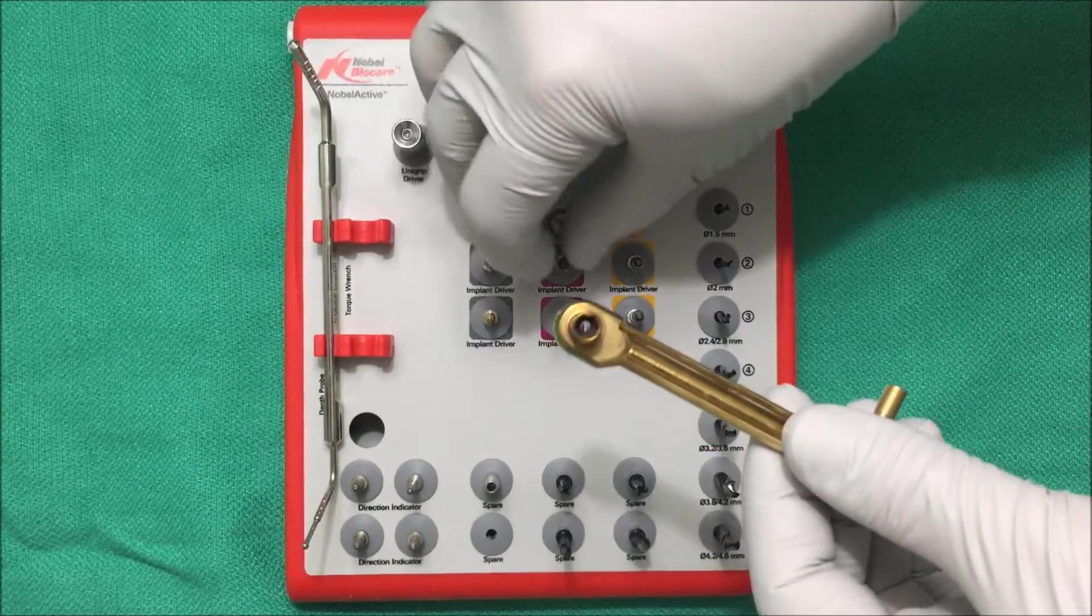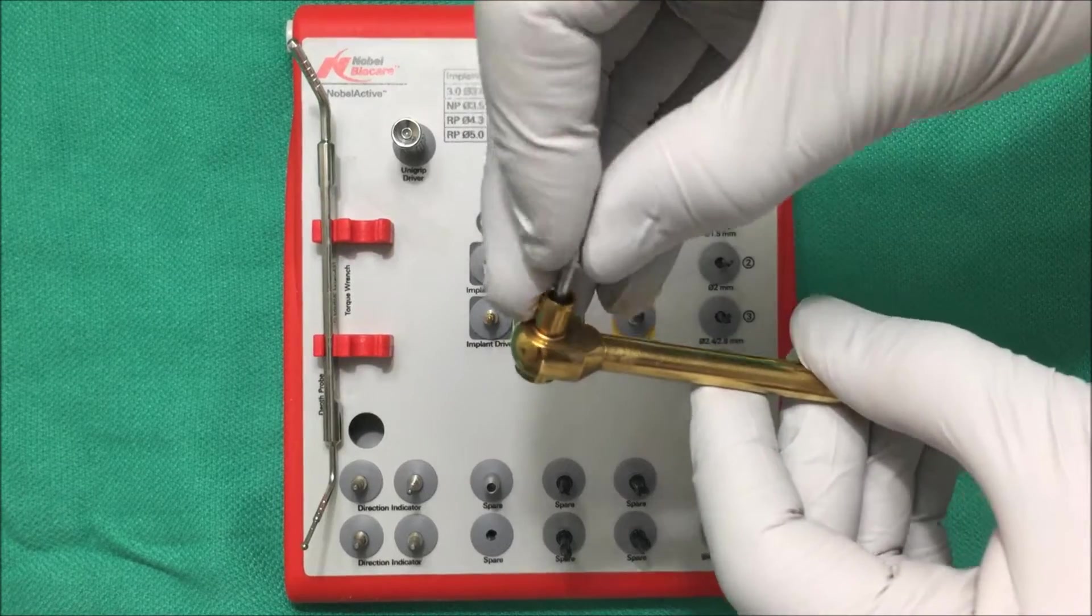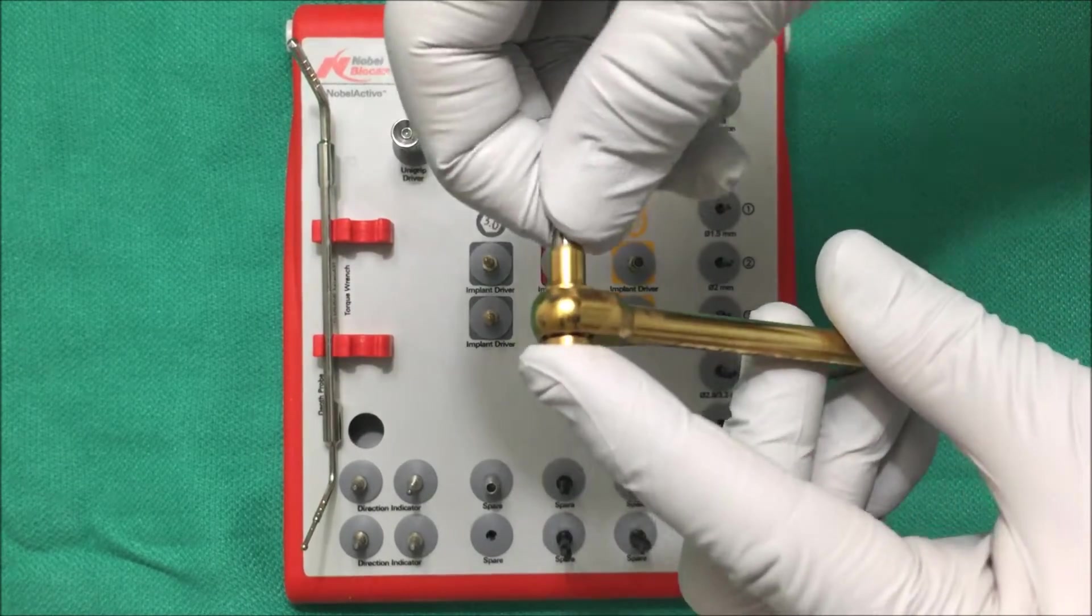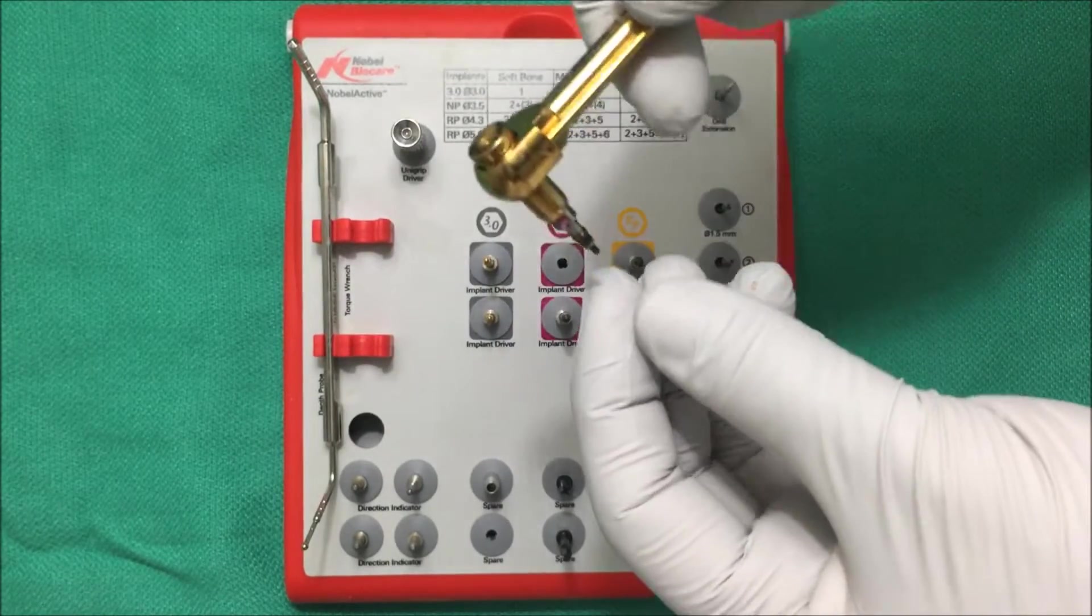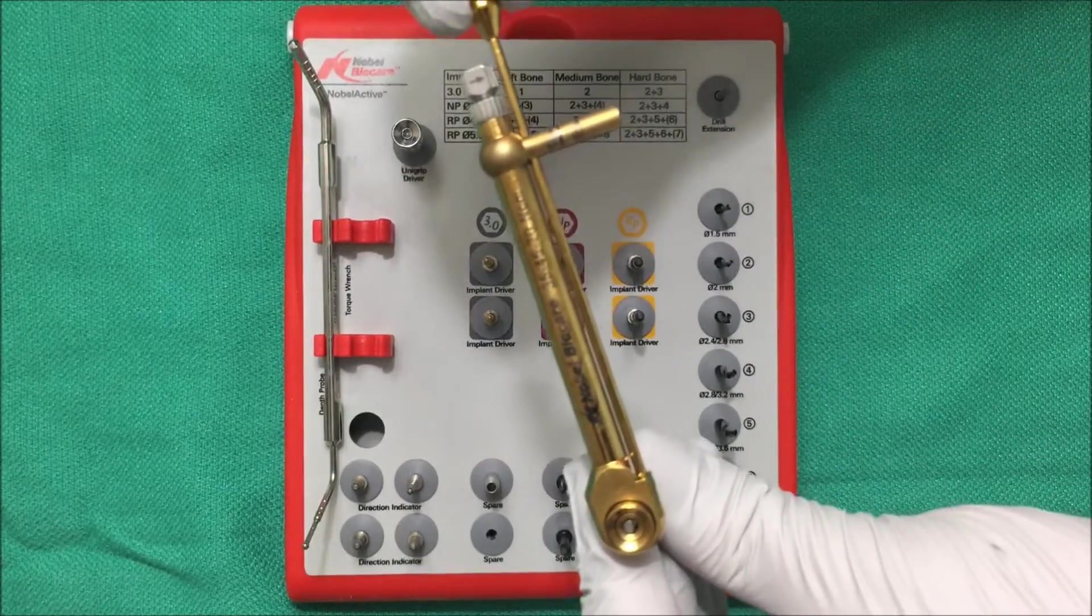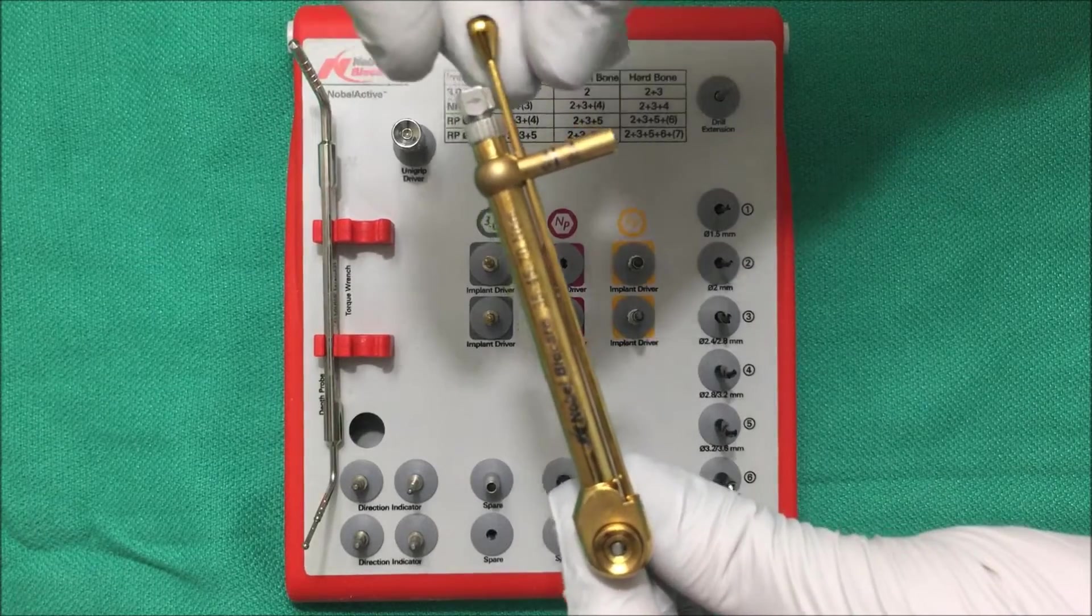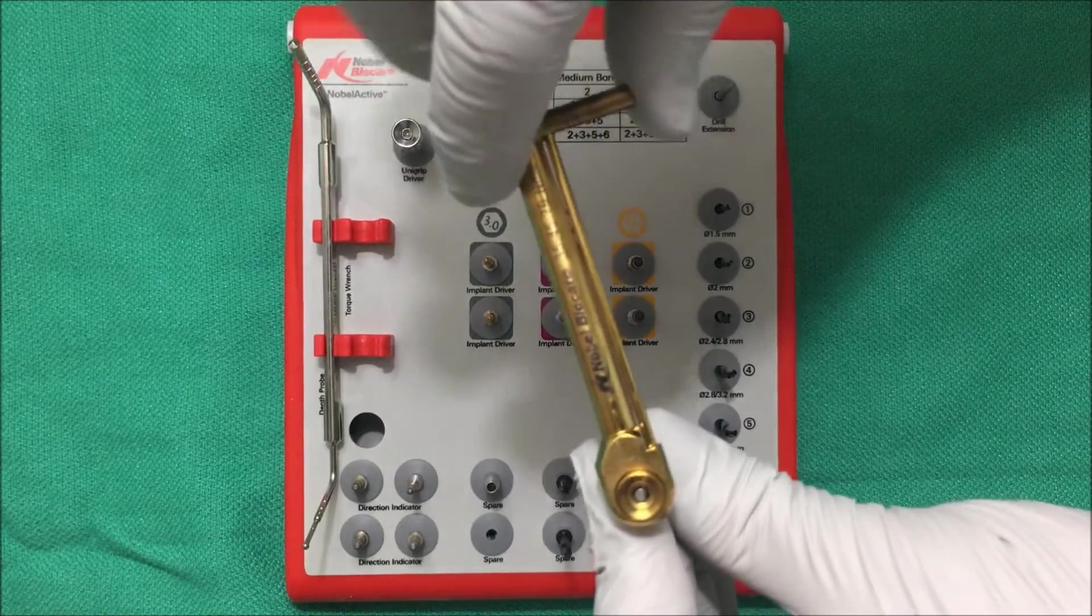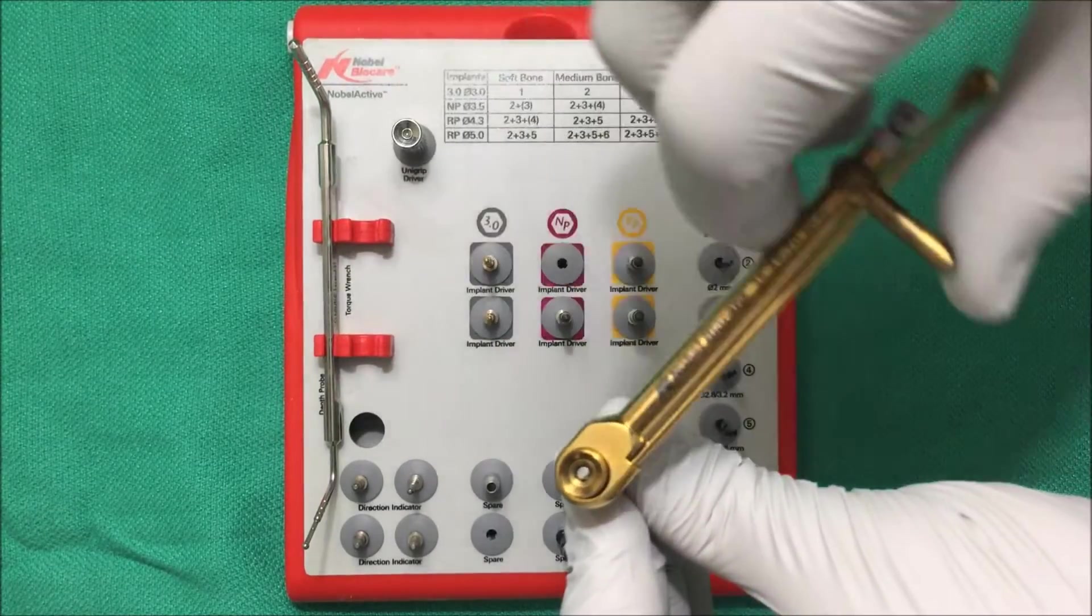So what you can do is take your implant driver, insert it into the tip, insert this into the implant site and then you can use this little ball to gauge your torque. Sometimes the torque is so tight that you might not be turning it too much with this and you just turn it by the whole handle.